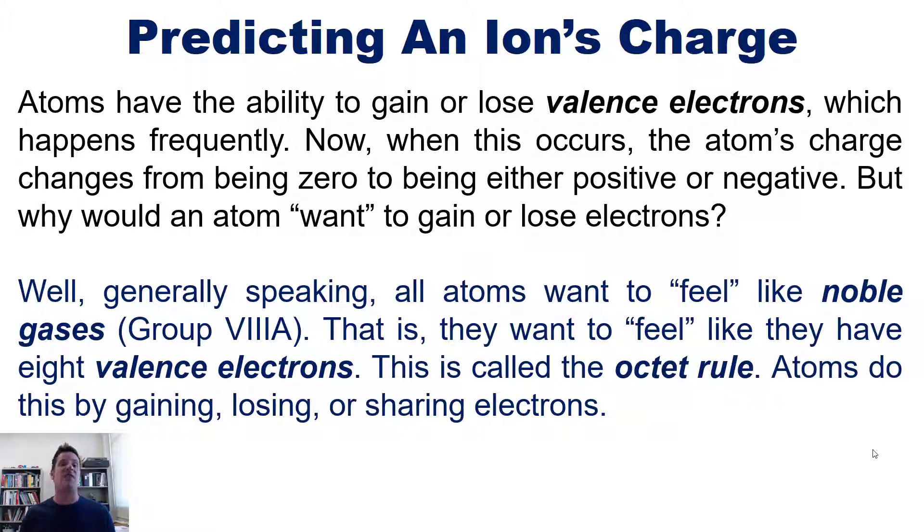Well, generally speaking, all atoms want to feel like noble gases. Those are the elements in column 8A. That is, they all want to feel like they have 8 valence electrons. This is called the octet rule. So atoms do this by either gaining, losing, or sharing electrons.